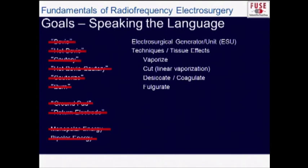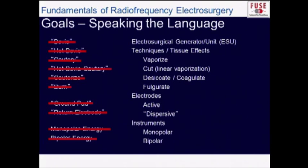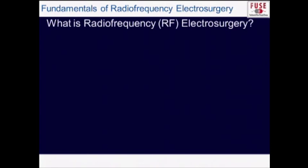We should use the terms electrosurgical generator or unit interchangeably. We don't cauterize things — we create different effects, so we need names for those effects. Vaporizing and cutting are related; desiccation and coagulation are related; and fulguration is a special kind of coagulation. Electrodes are either active or dispersive — there is no grounding. Instruments are either monopolar, with one electrode, or bipolar, with two. But all electrosurgery is bipolar — you need two electrodes.